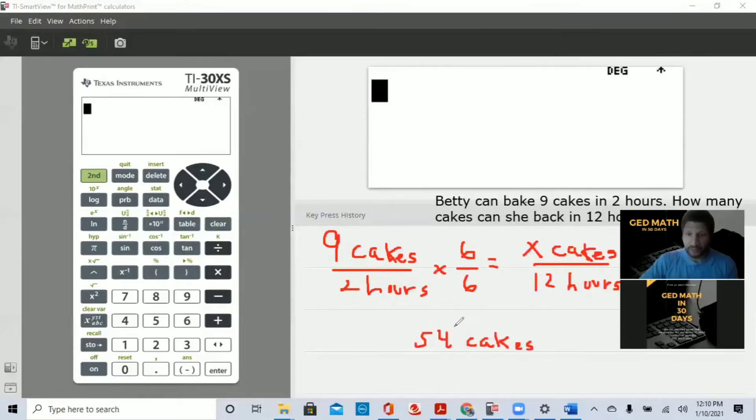Nine times six is 54. Very simple. 54 cakes. Very easy. So that's how you would solve this problem using equivalent fractions. This was equivalent fractions. Again, let me repeat. On the GED, I would attempt to look at the problem to see if I can solve it using equivalent fractions first.